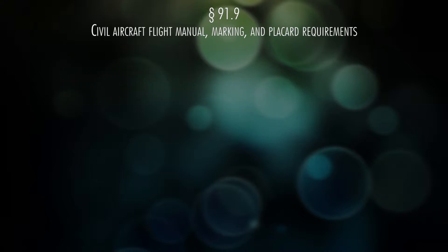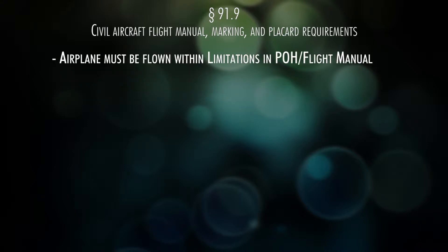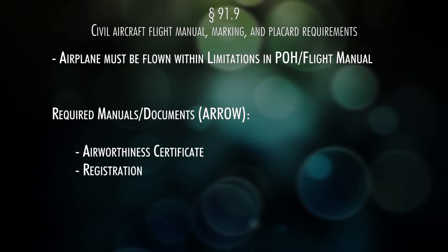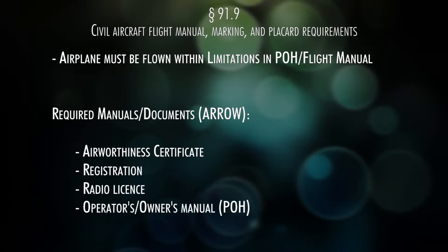91.9 says that the airplane must be flown within the limitations specified in the airplane manuals and the placards. This is also a good part to bring up what you need in the airplane as far as manuals and documents. The acronym is AERO: Airworthiness Certificate, Registration, Radio License if you decide to go out of the United States, the operating manual or the POH, and then the weight and balance — the actual weight of the airplane that you are flying, the actual tail number.